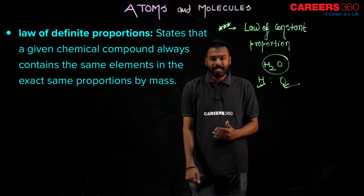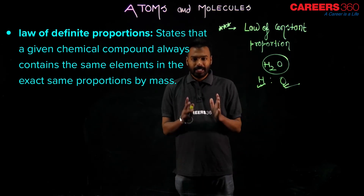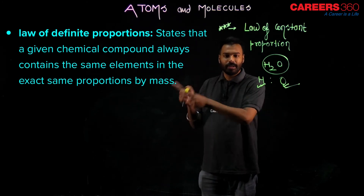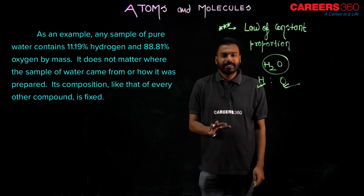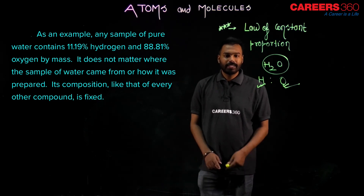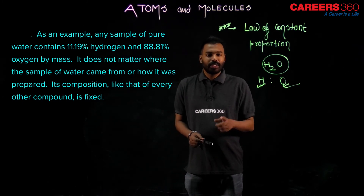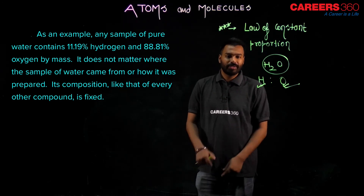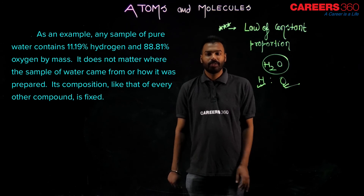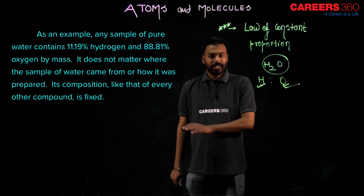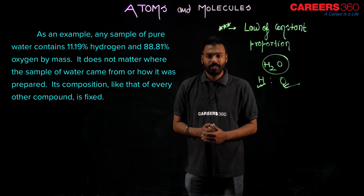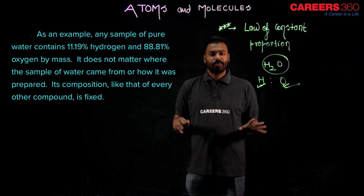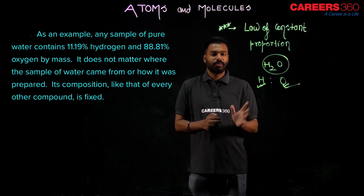We explain this topic numerically in class 11th, but in class 9th, this much is sufficient. As an example, any sample of pure water contains 11.19% hydrogen and 88.81% oxygen by mass — regardless of the source. It does not matter where you obtained the sample; its composition is the same from all sources. This is the law of constant proportion.